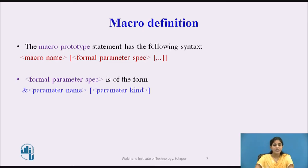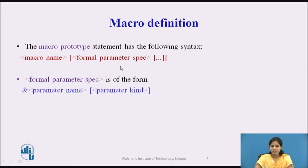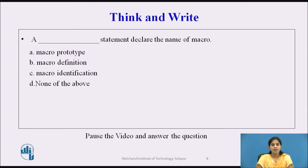Now we see the syntax of defining the macro prototype statement. First, we mention the macro name, then specify the formal parameter specification. The formal parameter specification has its own format: the syntax is ampersand, followed by parameter name and parameter kind. This is the syntax for writing the formal parameter specification.